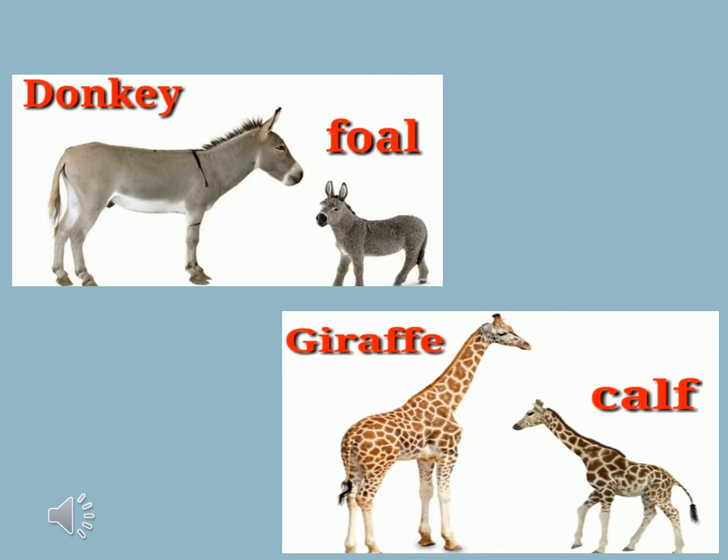Foal. Baby of a donkey is foal. Students, do you know that the donkey is an intelligent animal and it is very strong? Donkeys are used to carry load, and their babies, which means foals, are also used to carry load. Next is giraffe.